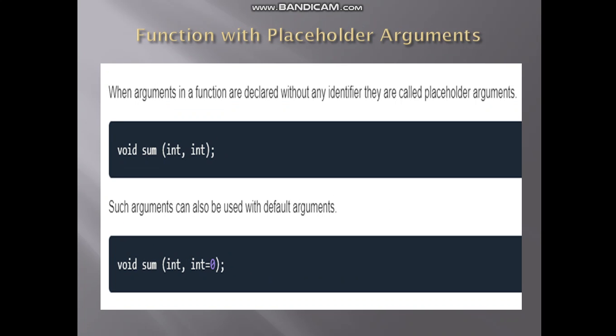Functions with placeholder arguments — when you declare a function without any identifier, those are called placeholder arguments. In the declarations shown, 'sum' is declared with placeholder arguments and no identifiers. Such arguments can also be used with default arguments.